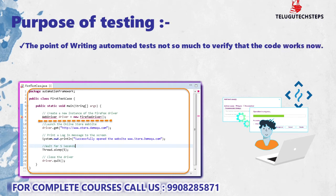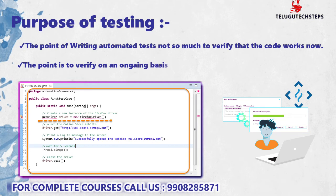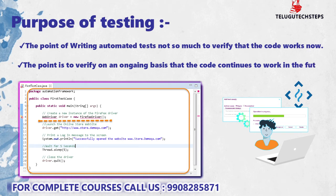For example, when you write a test case and someone else makes a change to the code, they will run your test cases. If they break the functionality, your test case is going to catch that broken functionality. This provides a safety net for any future regression issues in our code, which is why we write test cases in any real-time project.